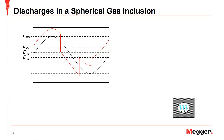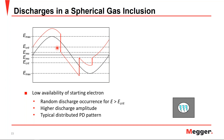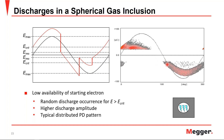Conversely, in a spherical gas inclusion with low availability of starting electrons, the electric field can surpass the critical field without breakdown occurring immediately, leading to random, higher-magnitude discharges. Because there is no advantage of high electron availability, discharges become more random and of significantly higher magnitude. On the phase-resolved partial discharge pattern, we can see the growing electric field and then discharge taking place at higher magnitude, not necessarily following the first and third quarter pattern as with high electron availability.